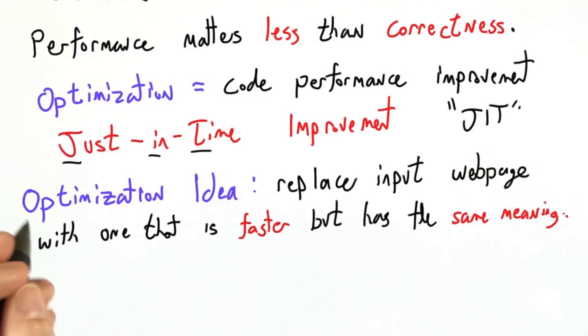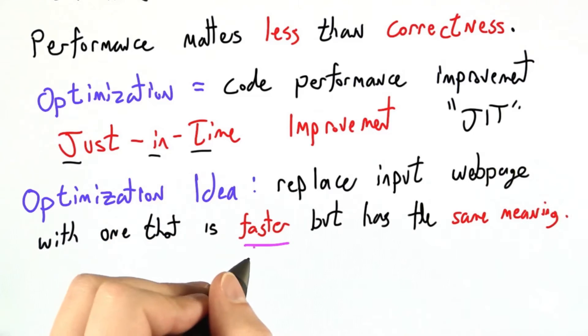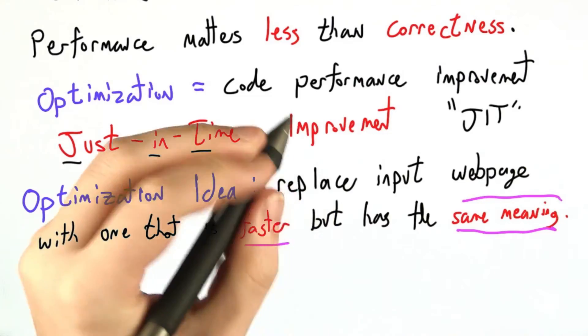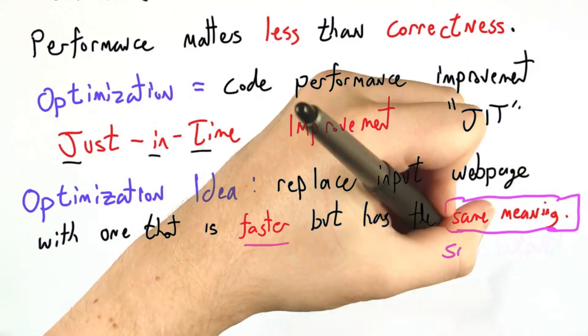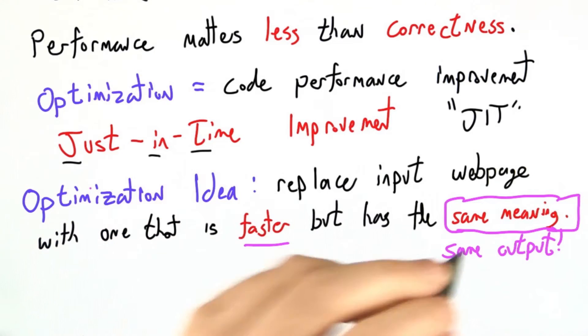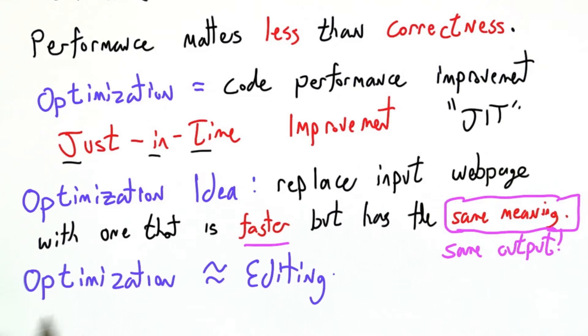So our basic optimization idea is going to be to replace the input web page, the HTML or JavaScript fragment, with one that takes less time to process, but has, and this is super critical, I cannot emphasize this enough, exactly the same meaning. We must produce the same output with optimizations on and with optimizations off, aside from the time it takes. We absolutely can't change the meaning. We have to be correct.